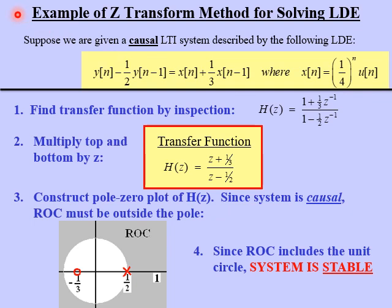Let's work through an example to show all of these methods. Suppose we're given a causal LTI system described by the following linear difference equation: y of n minus one-half y of n minus 1 equals x of n plus one-third x of n minus 1. The input of this system, x of n, is given as one-fourth to the n times the step function u of n.